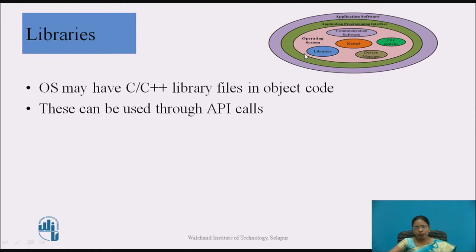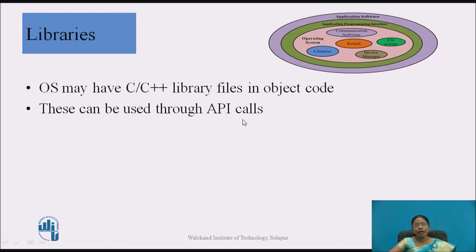The next element is libraries. The OS may have libraries such as C and C++ library files in object code. These files are available in object code and can be used through API calls. What are API calls? We will see that next.